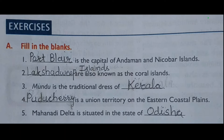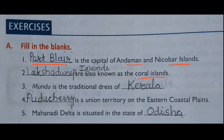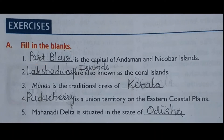Let's start with Exercise A: Fill in the Blanks. First question: dash is the capital of Andaman and Nicobar Islands. The answer is Port Blair — Port Blair is the capital city of Andaman and Nicobar Islands. Question number two: dash are also known as the coral islands. When we read the chapter, I told you that the Lakshadweep Islands are also known as coral islands because they are made up of corals. So the answer is Lakshadweep Islands.